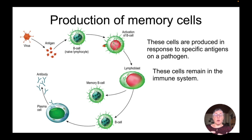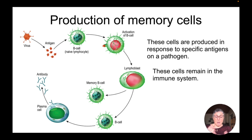When we talked about the production of memory cells, they must be triggered by a response to specific antigens on a pathogen or in a vaccination. You will not have memory cells developed otherwise, and these cells remain in the immune system for a very long period of time, possibly through the lifetime of the human being.